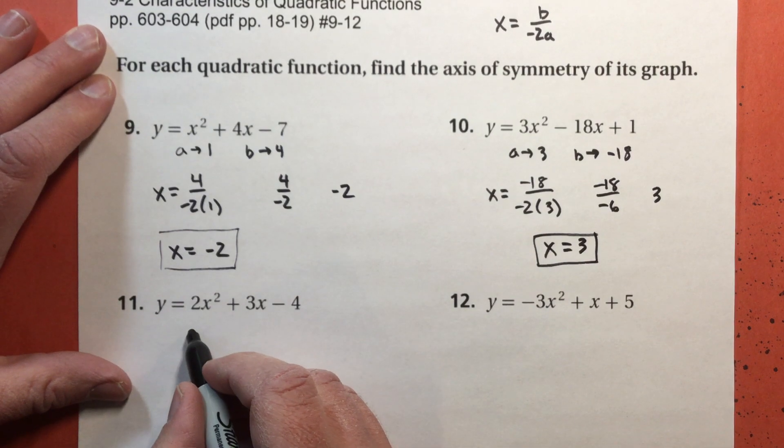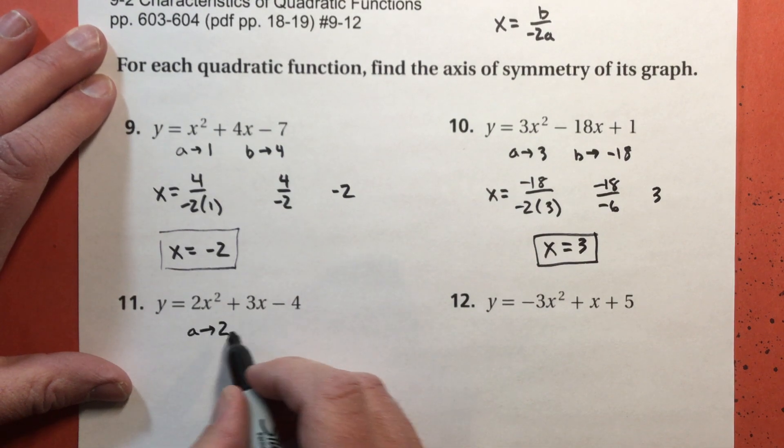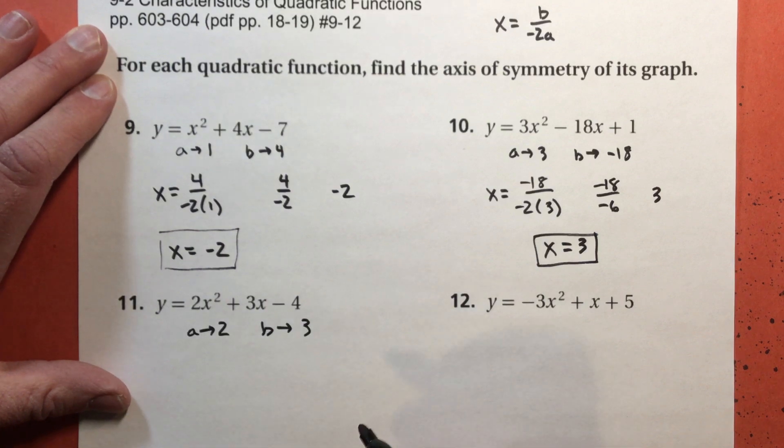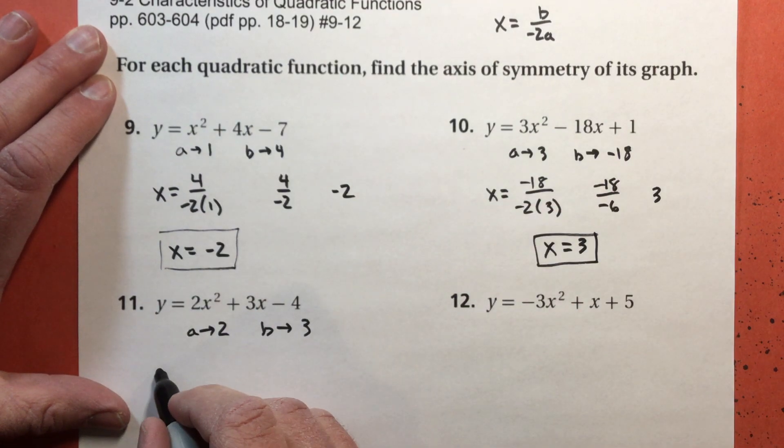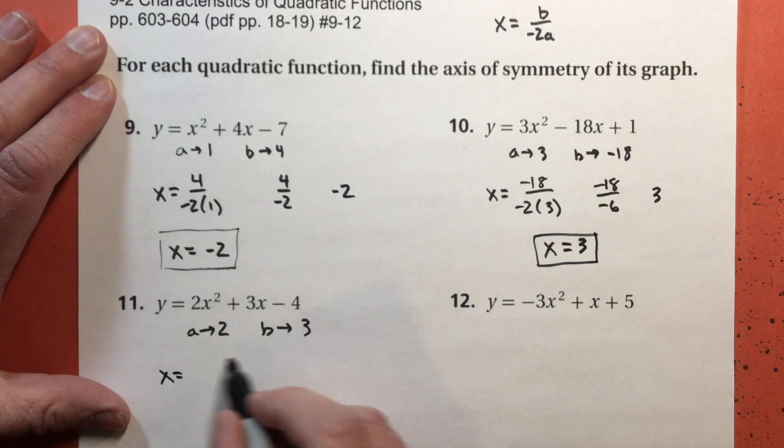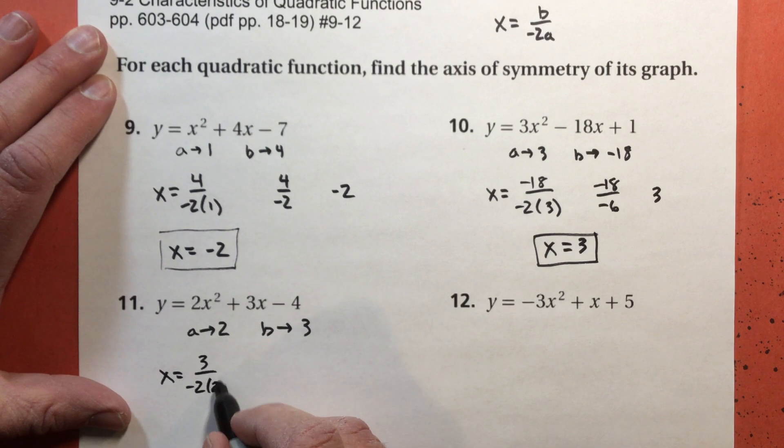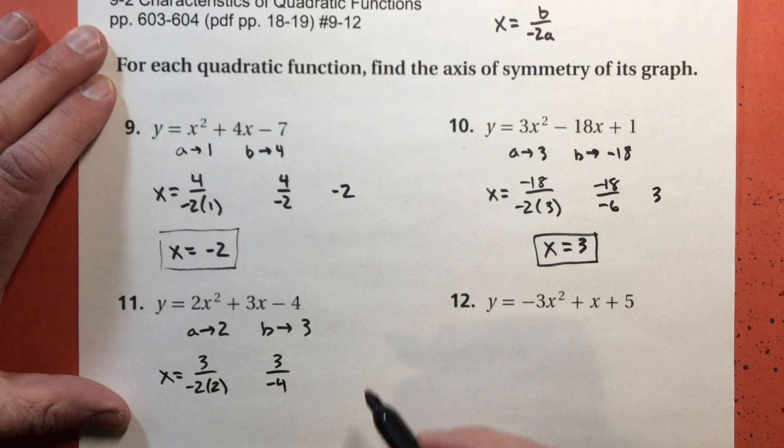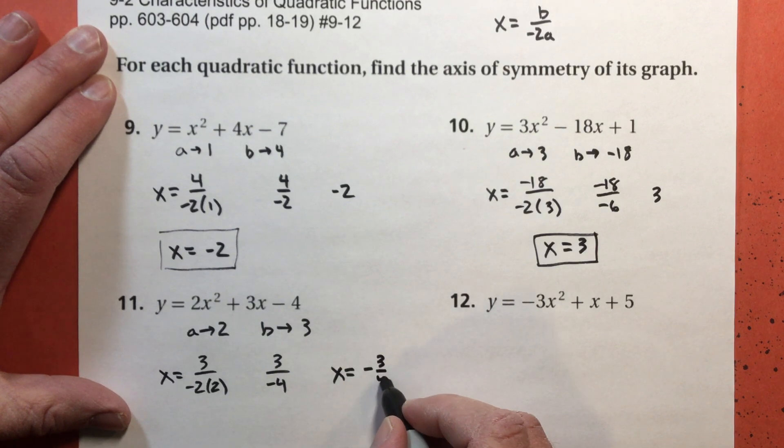For problem number 11, I get 2 for my a, and my b is 3. And of course, notice I'm leaving off the c, the negative 7, the 1, the negative 4. It doesn't matter. So my axis of symmetry is 3 divided by negative 2 times 2. This is 3 over negative 4. You can leave it like that. You don't have to change it to a decimal. My axis of symmetry is x equals negative 3 fourths.